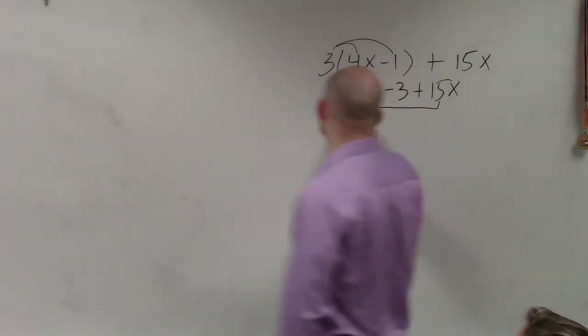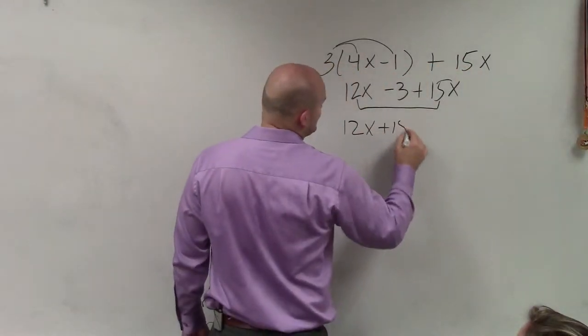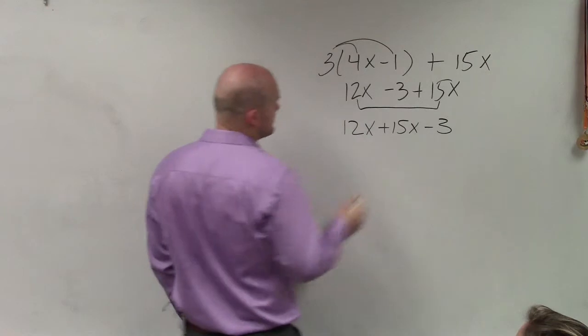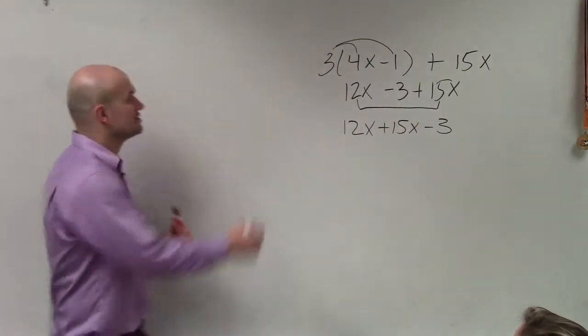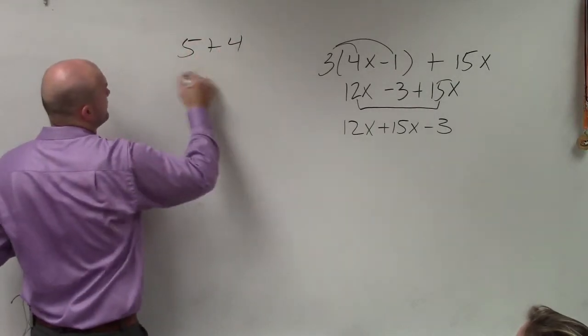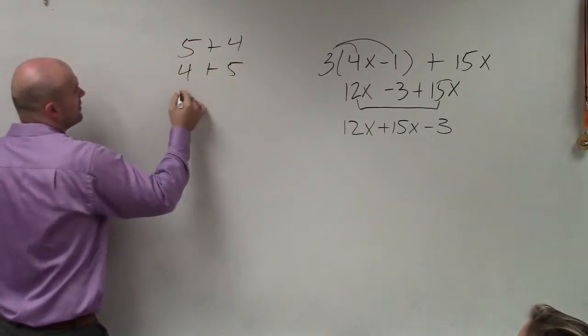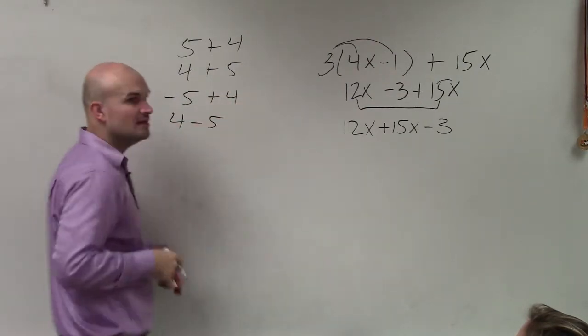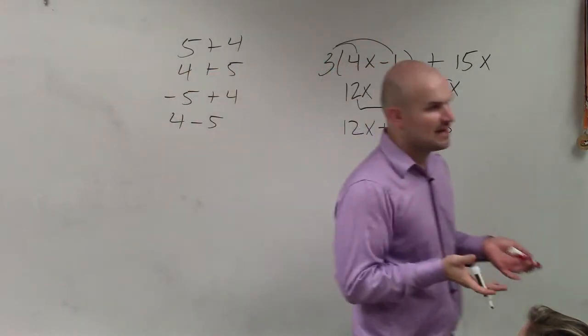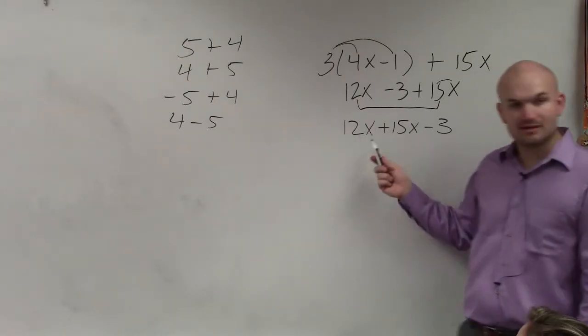Sometimes it's helpful just to rewrite the expression: 12x plus 15x minus 3. Do you guys notice how the sign for each of these is still the same? I just rewrote it. Just like you can write 5 plus 4 is the same as 4 plus 5, or negative 5 plus 4 is the same as 4 minus 5. As long as you keep the signs together or the same, you can rewrite them, put them together.